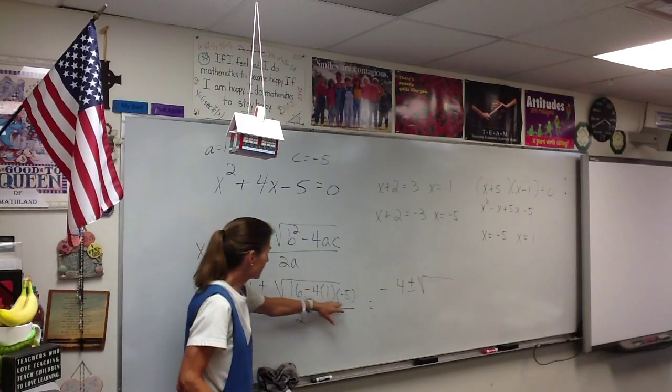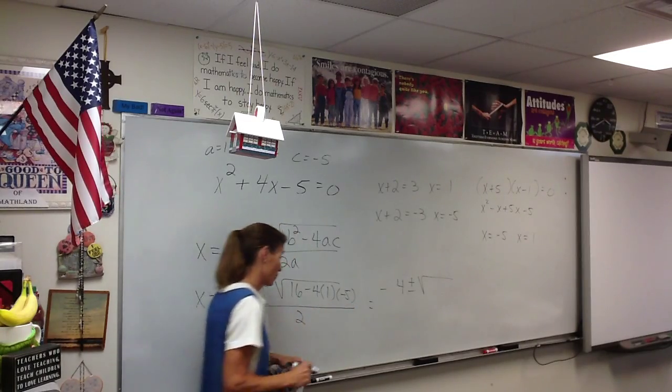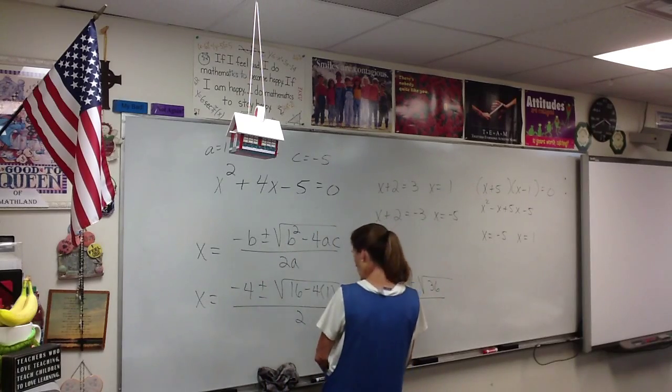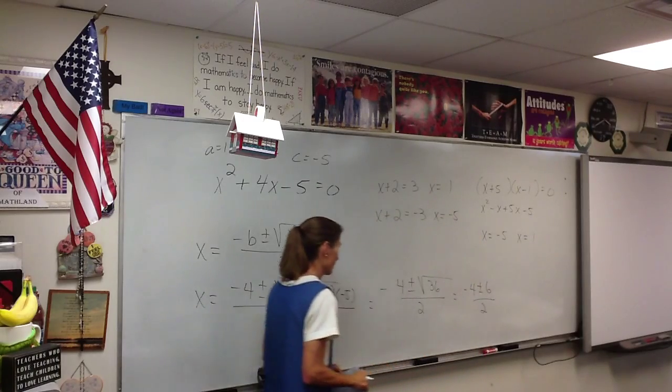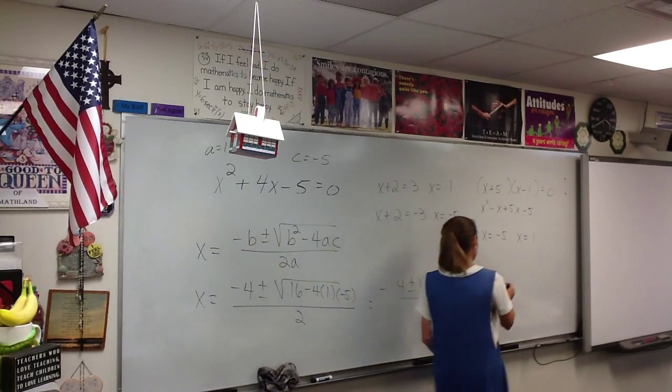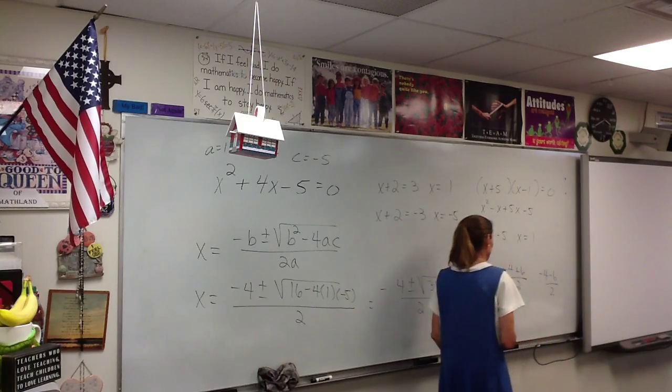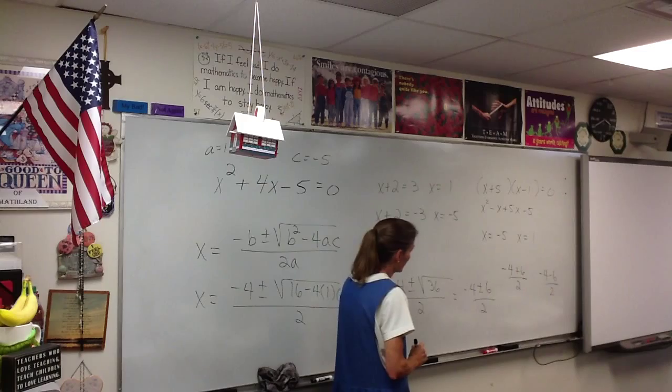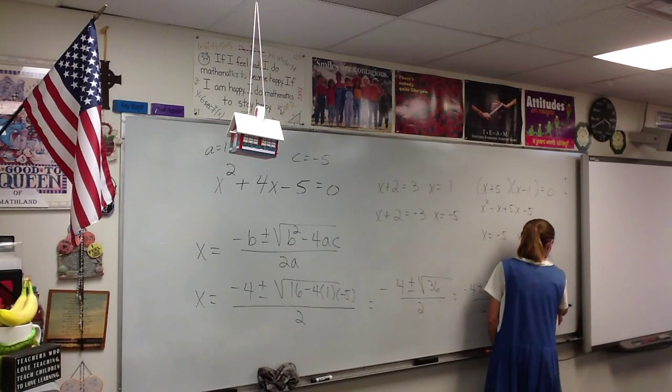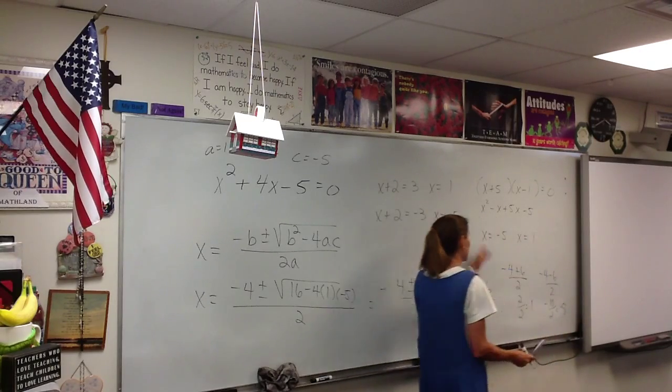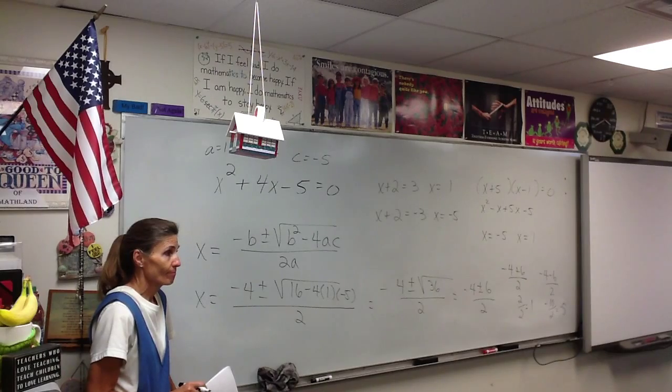Watch your signs here. What does this multiply to equal? 20. So we've got a 36 in here. And of course the square root of 36 is 6. So we have negative 4 plus 6 over 2. And negative 4 minus 6 over 2. Negative 4 plus 6 is 2 over 2 is 1. Negative 10 over 2 is negative 5. Yeah, the exact same answer.